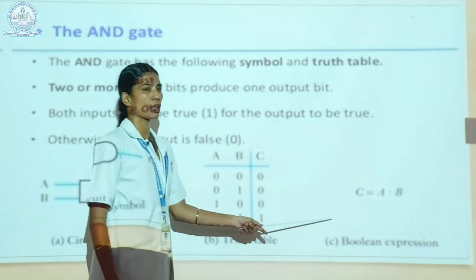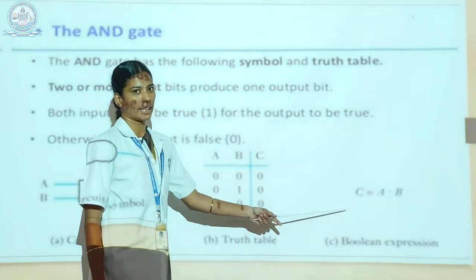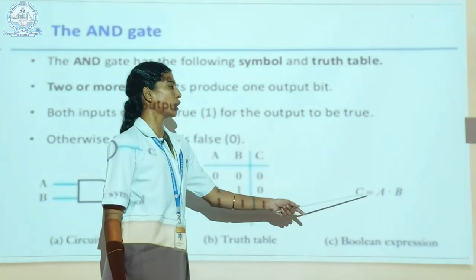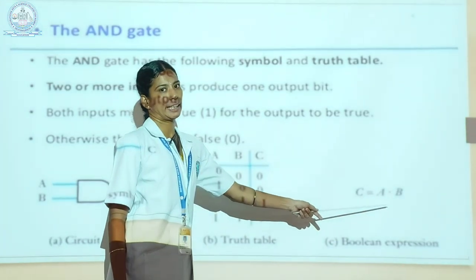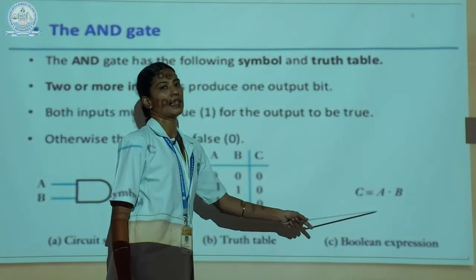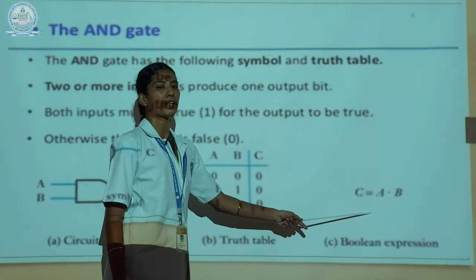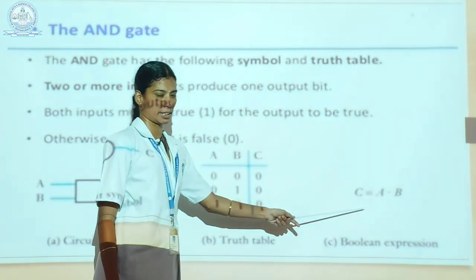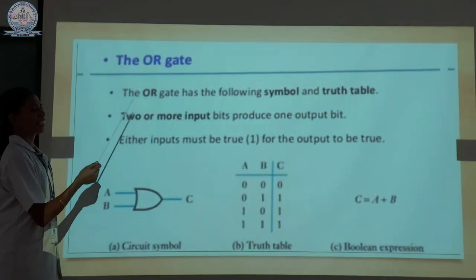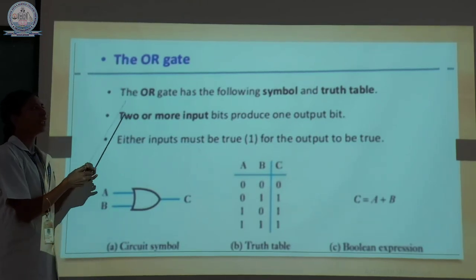Here the Boolean expression of the AND gate: C is equal to A dot B. It is the product form of the AND gate.